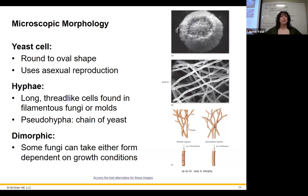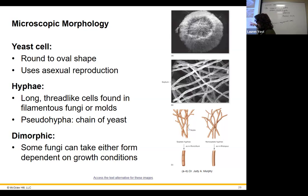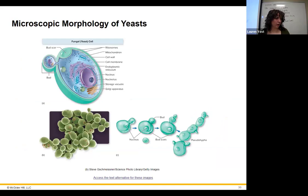Hyphae are long thread-like structures — those long furry pieces you see on mold are hyphae. Yeast can form similar structures called pseudo-hyphae. Some fungi can go between different forms. In hyphae, cells are separated — those separations are called septa. Non-septate hyphae lose those separations between cells and become like one unit.